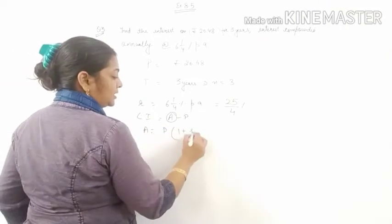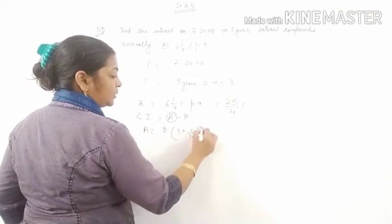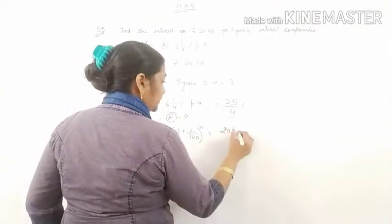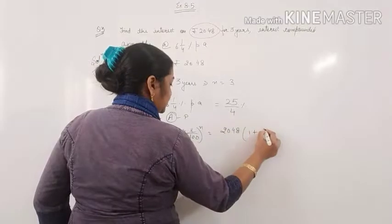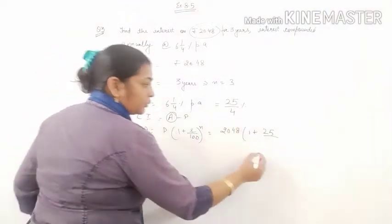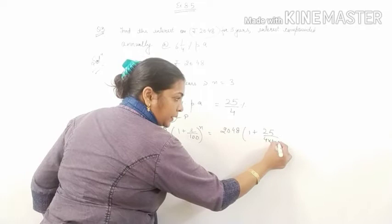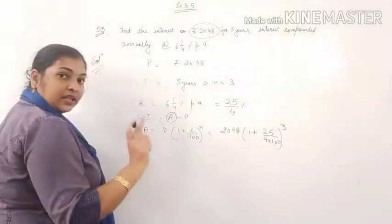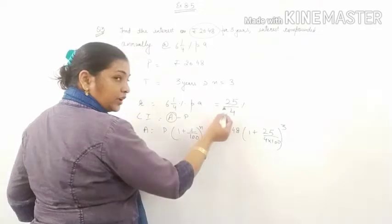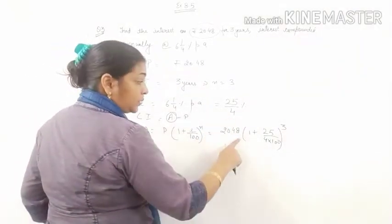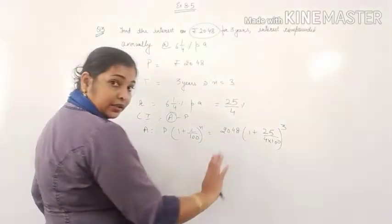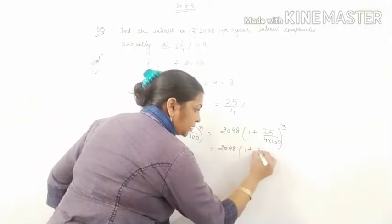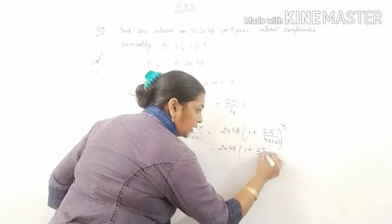P into 1 plus R by 100 raised to the power n. Principle is 2048, 1 plus 25. Now this 4 is in denominator, so it will be multiplied by 100. N is 3. Once again I am repeating, this 4 is in denominator, so it will be multiplied by 100 in the denominator itself.